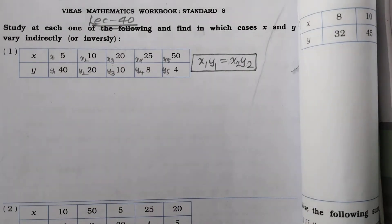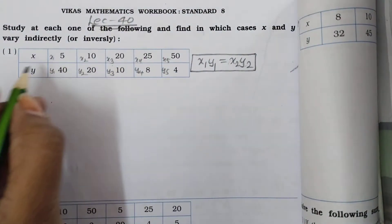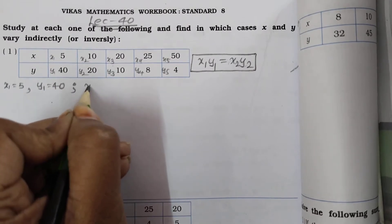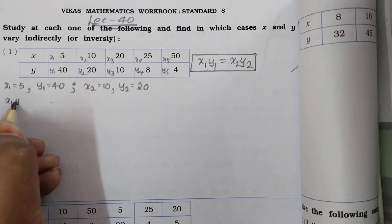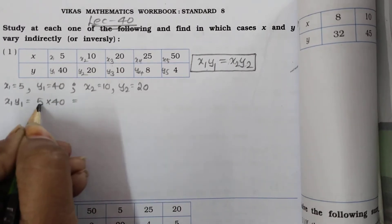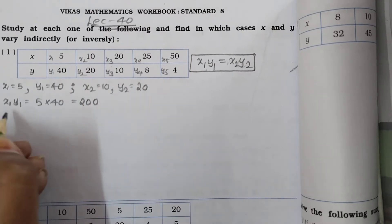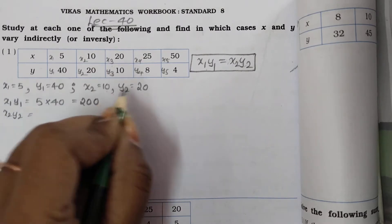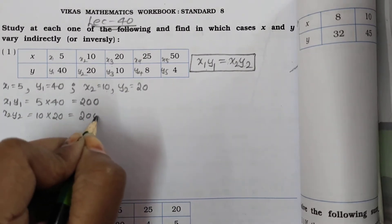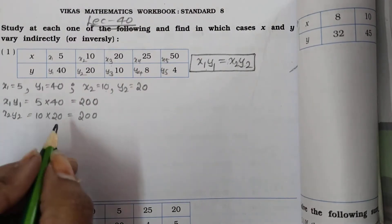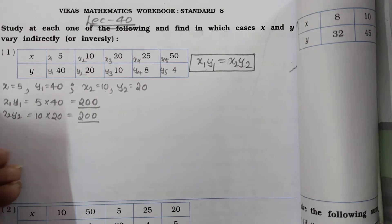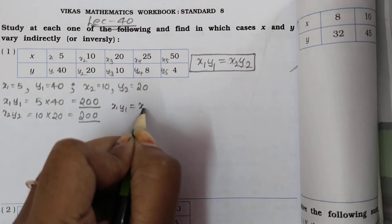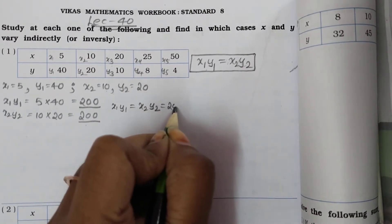उसके लिए पहले x1 = 5, y1 = 40, x2 = 10, y2 = 20 लेते हैं। तो x1 × y1 = 5 × 40 = 200, और x2 × y2 = 10 × 20 = 200। यहाँ condition देखें: x1y1 = x2y2, दोनों 200 = 200 आ रहा है — दोनों की value same है।